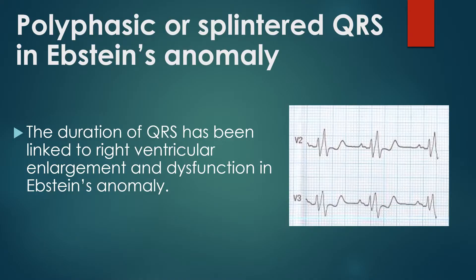The duration of QRS has been linked to right ventricular enlargement and dysfunction in Ebstein's anomaly. A larger atrialized right ventricular volume has been noted in these cases. As a corollary, those with a near-normal ECG would have mild morphological abnormalities and a better clinical profile.